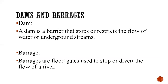A dam is a barrier that stops or restricts the flow of water or underground streams, and it stores a huge amount of water. Whereas barrages are floodgates used to stop or divert the flow of a river, with no reservoir attached to the barrage.